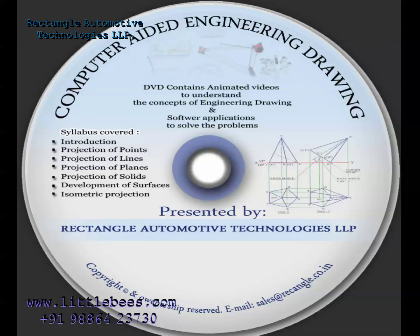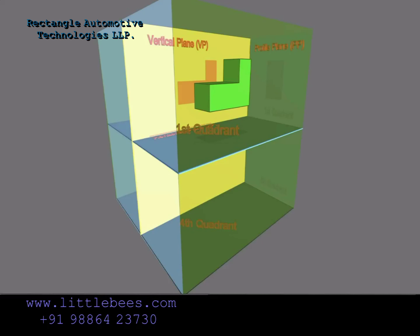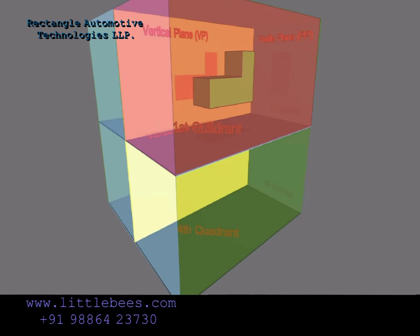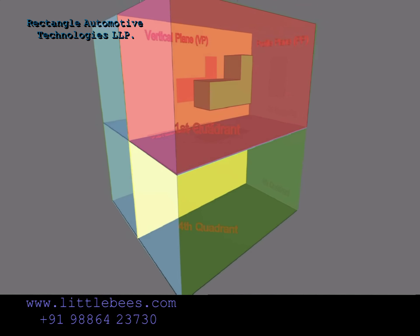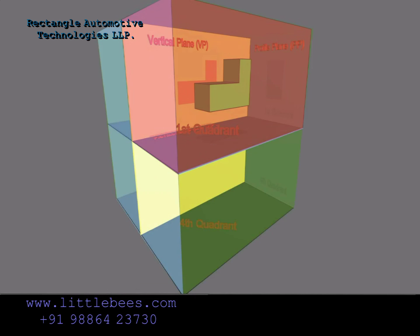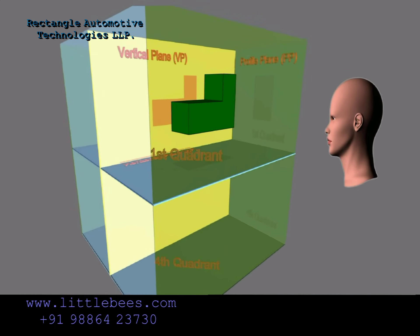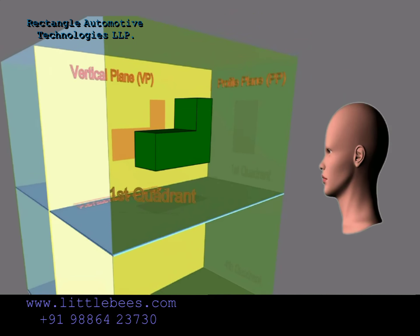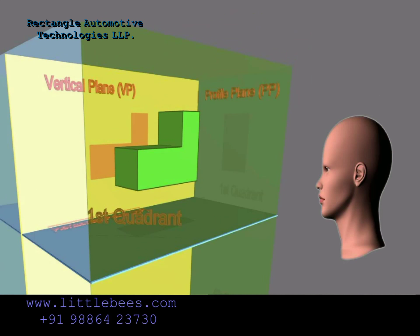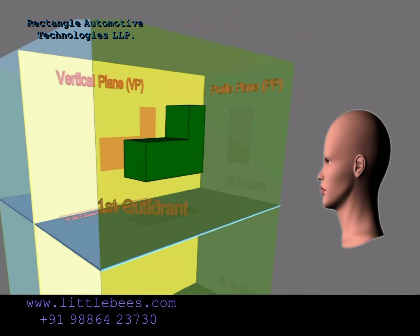Let's consider the glass box concept. Looking at the first quadrant, it appears like a rectangular glass box. The object inside the glass box is visible to the observer who is observing from the outside.